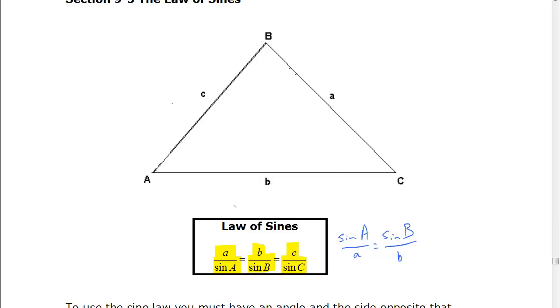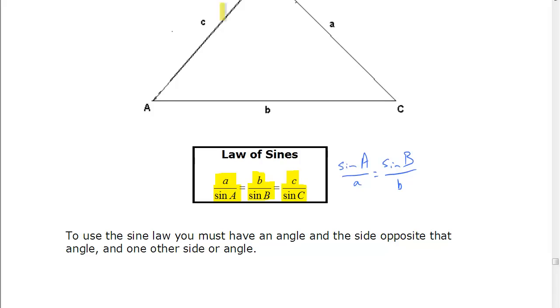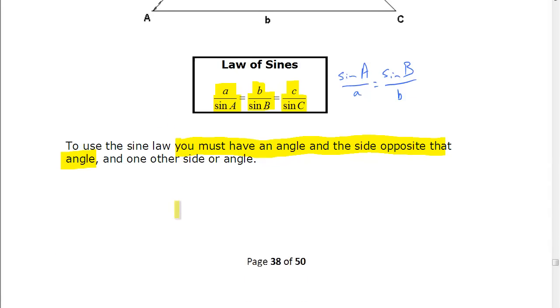Any time that we have a side and the angle opposite, then the law of sines is usually what we'll start with. In order to use the law of sines, you must have an angle and the side opposite the angle. So it only works if you have a side and an angle pair. If you don't have that situation, law of sines is not going to help.